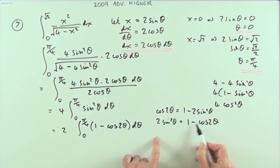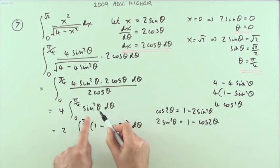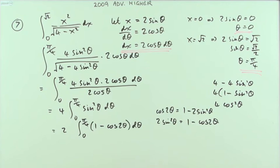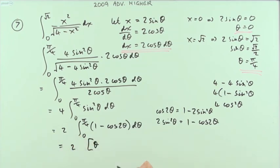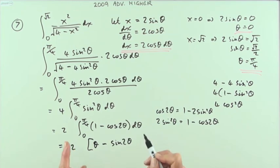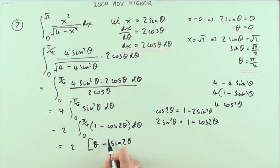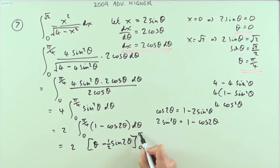Ready to integrate: the integral of one is θ, and integrating cos 2θ gives sine 2θ divided by the derivative of the inner function, so it's minus one half sine 2θ, evaluated from zero to π/4.